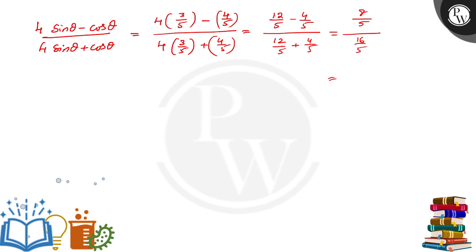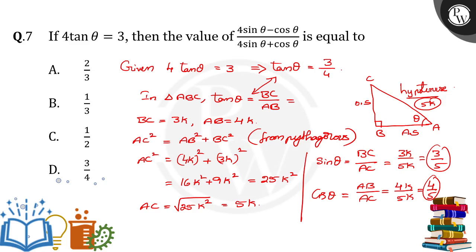The 5s cancel, leaving 8/16, which simplifies to 1/2. So the final result is 1/2. Option C is the right answer. Thank you.